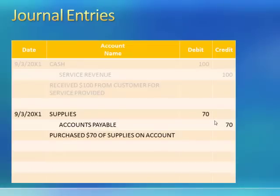Our next journal entry happened on 9-3 of year one, and we see supplies being debited for $70 and accounts payable being credited for $70. The description is: we purchased $70 worth of supplies on account. The economic event that occurred was the purchase of $70 of supplies on account. The accounting transaction that recorded this economic event was the debit to supplies, $70, and the credit to accounts payable, $70.